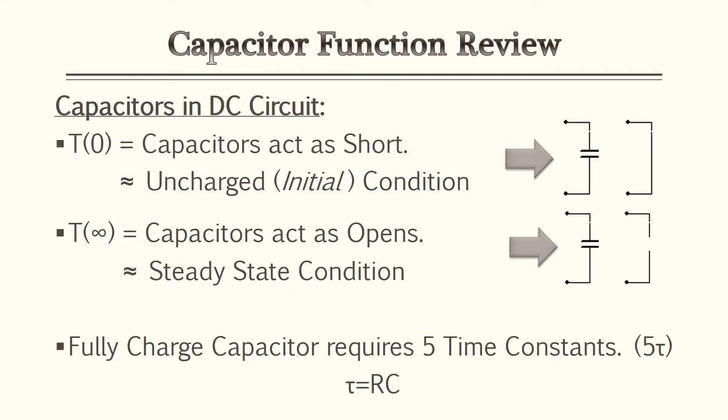To perform the transient analysis we must understand how a capacitor works in a DC circuit. When a capacitor is uncharged it acts as a short — this is the initial condition assumption if not stated otherwise. When a capacitor is fully charged, or at steady state, it acts as an open. A capacitor requires five time constants to reach steady state, where five time constants equals RC times five.